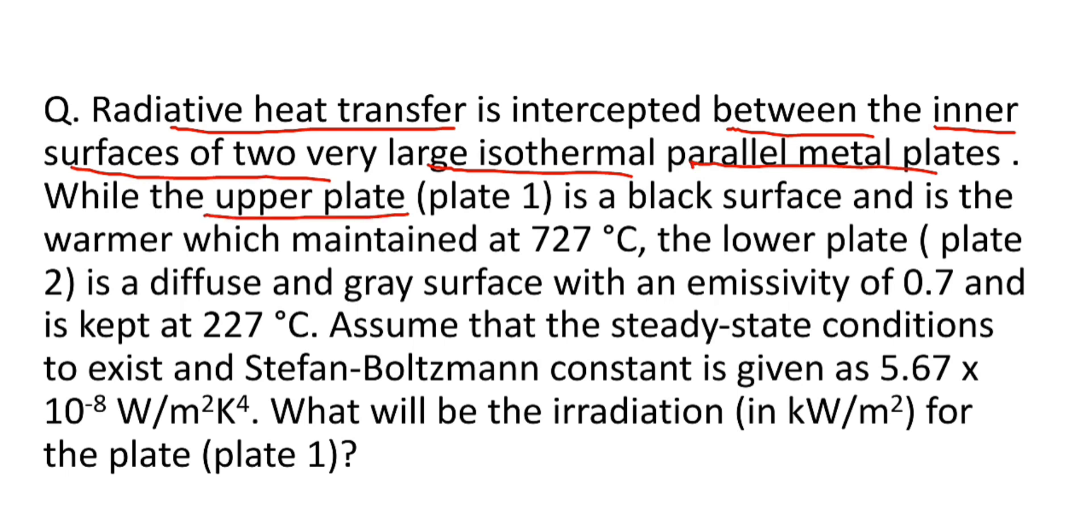The upper plate, that is plate 1, is a black surface and is the warmer which is maintained at a temperature of 727 degrees Celsius. The lower plate, that is plate 2, is a diffuse and grey surface with emissivity of 0.7 and is kept at 227 degrees Celsius.